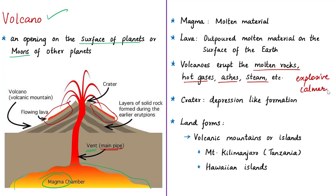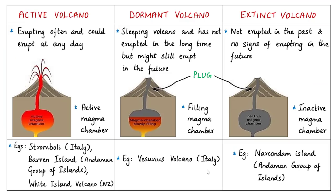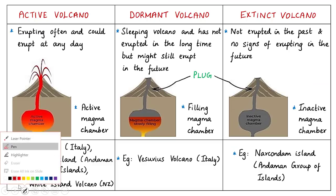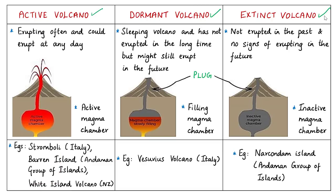Volcanoes erupt molten rocks, hot gases, ashes, and steam. Eruptions can be explosive, sending material high into the sky, or calmer, resulting in a gentle flow. After eruptions, a depression-like formation called a crater forms at the top. Volcanic eruptions create volcanic mountains or volcanic islands, such as Mount Kilimanjaro in Tanzania and the Hawaiian Islands. Volcanoes are classified by frequency of eruptions into three types: active, dormant, and extinct.